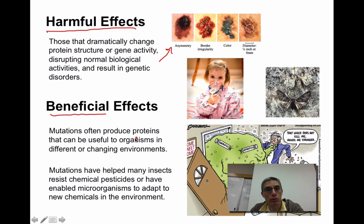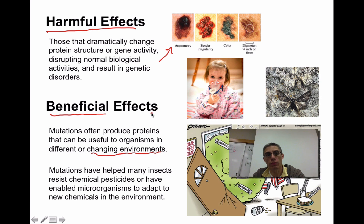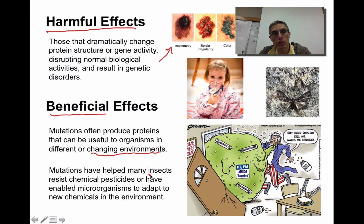For example, there are mutations that produce proteins that could be useful if the environment should happen to change. If a mutation causes a change in fur color that allows an animal to blend in with its environment better, that organism has a greater likelihood of surviving compared to others — so that mutation was very beneficial. There are also examples of mutations that have helped many insects resist chemical pesticides. From our perspective that seems negative, but from the insect's viewpoint, that special change in its DNA allows it to survive.